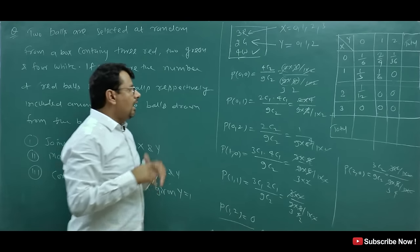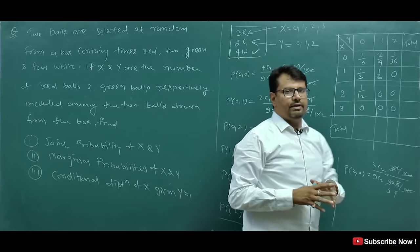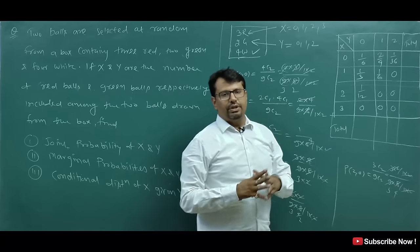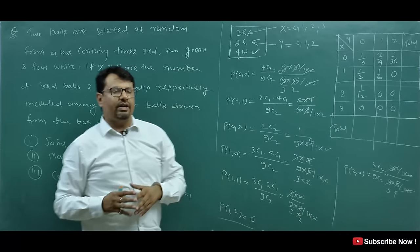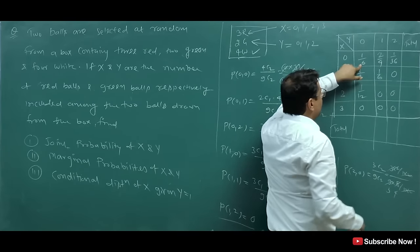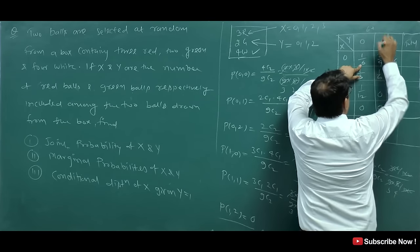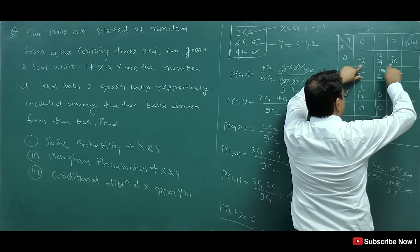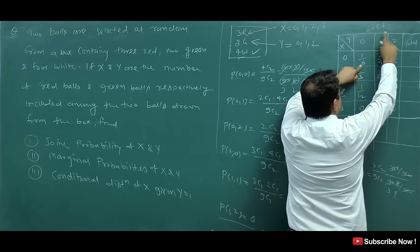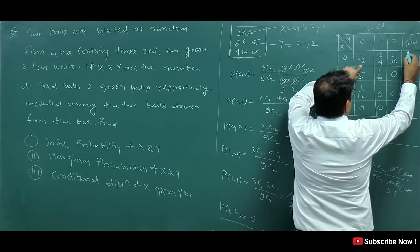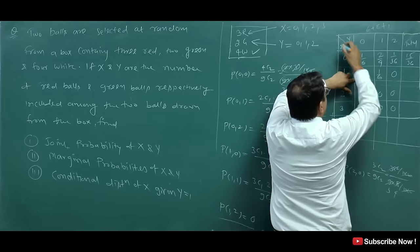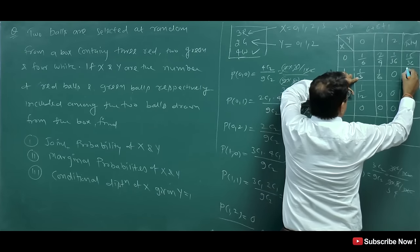Now we need to complete the table. After getting all the cell values, we add them row-wise and column-wise to get the marginal totals. Adding the values for the first row gives 15/36. Adding the values for the second row gives 18/36. Adding the values for the third row gives 3/36. The column totals (marginal PMF of Y) come out to 21/36, 14/36, and 1/36.